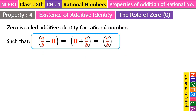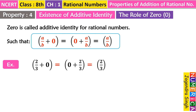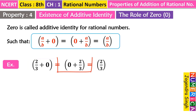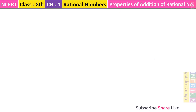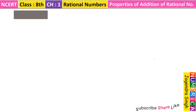For example, 2/3 + 0 = 2/3. Zero means nothing. And 0 + 2/3 is also 2/3. That means add nothing to any rational number and it stays the same — we are adding 0, so 0 is our additive identity.